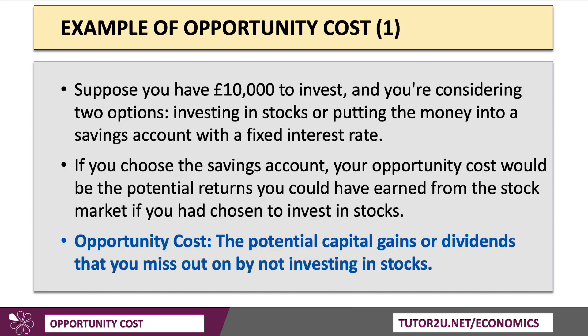For example, you've got £10,000 to invest and you're considering two options: one is to put the money into stocks and shares, or alternatively, put the money into a savings account — for example, a one-year fixed ISA with a fixed interest rate. Now, if you choose the savings account, your opportunity cost will be the potential returns you could have earned from the stock market — the potential capital gains or the dividends from shares would be the opportunity cost you miss out on by not investing in stocks.